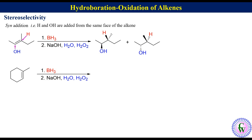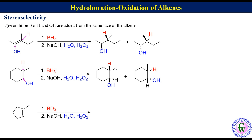Hydroboration oxidation of methylcyclohexene: the OH will add to the less substituted carbon of the alkene and H to the more substituted carbon. Addition of H and OH from the top face gives one alcohol, while from the bottom face gives its enantiomer. Another example where BD3 is used in place of BH3: there will be addition of OH on the less substituted carbon and D on the more substituted carbon. Addition from the top face gives one enantiomer while addition from the bottom gives another.